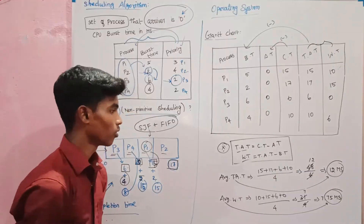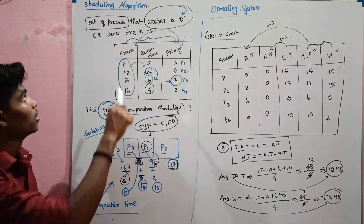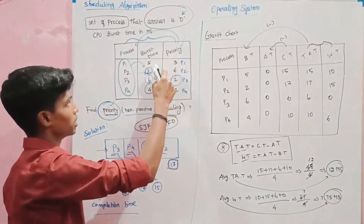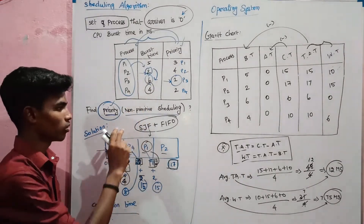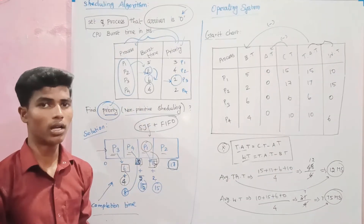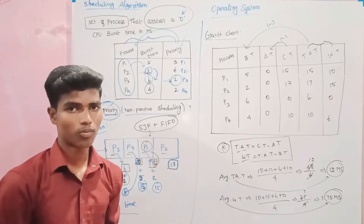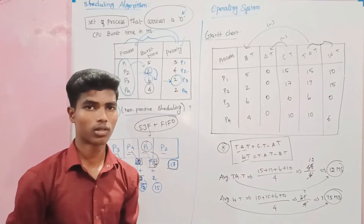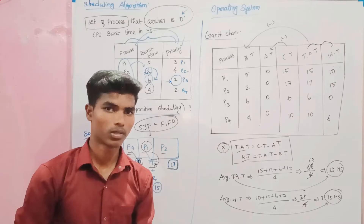So you can see how to find priority scheduling in the scheduling algorithm. This one is different from SJF and compare with First In First Out (FIFO) passes. If you want to get a clear idea, watch until the end of the video. Please like, share, and comment. Thank you for watching.